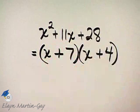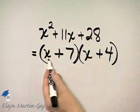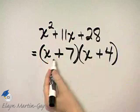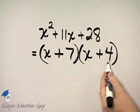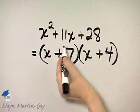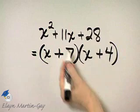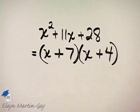And how can you check? You can check by multiplying. First times first is x squared. Then that's 4x plus 7x, which is 11x. And last times last is 28. So there is my factorization.